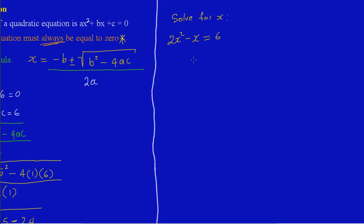Basically, when you look at this quadratic equation, you know it's a quadratic because the highest power of the variable is 2. It's a quadratic — it may not look like something you are used to. So basically, once you realize it's a quadratic, you must equate it to zero. We're going to bring over the 6, so we have 2x squared minus x, and subtracting 6 from both sides gives us 2x squared minus x minus 6 equals zero. Now here we have our quadratic in its general form.